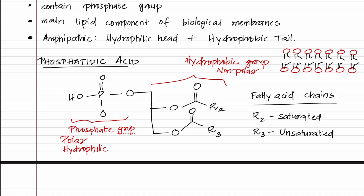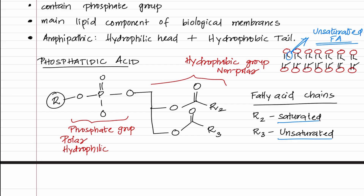There is a slight kink in one of the tails of the bilayer. This kink is formed due to the unsaturated fatty acid present in the structure — that is why one saturated and one unsaturated fatty acid was used. For the general structure of phospholipids, instead of having an OH group, there would be an R group, which can be choline, serine, ethanolamine, etc. According to those functional groups, different types of phospholipids can be formed.